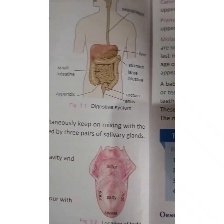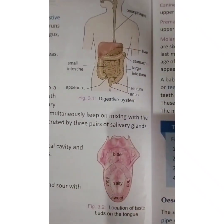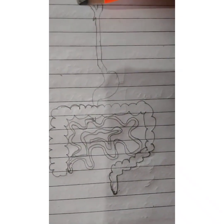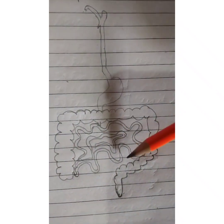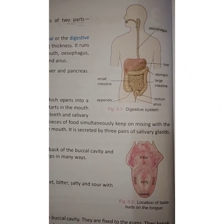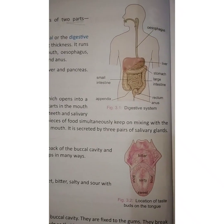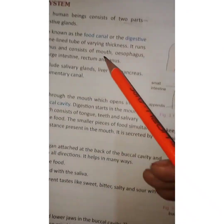The alimentary canal, in literal terms, is a long pipe — about 30 feet in length. As you can see in the diagram, it starts from the mouth. The definition of the alimentary canal is: it is a long passage inside the body through which food moves from the mouth to the opening where it leaves the body as waste.